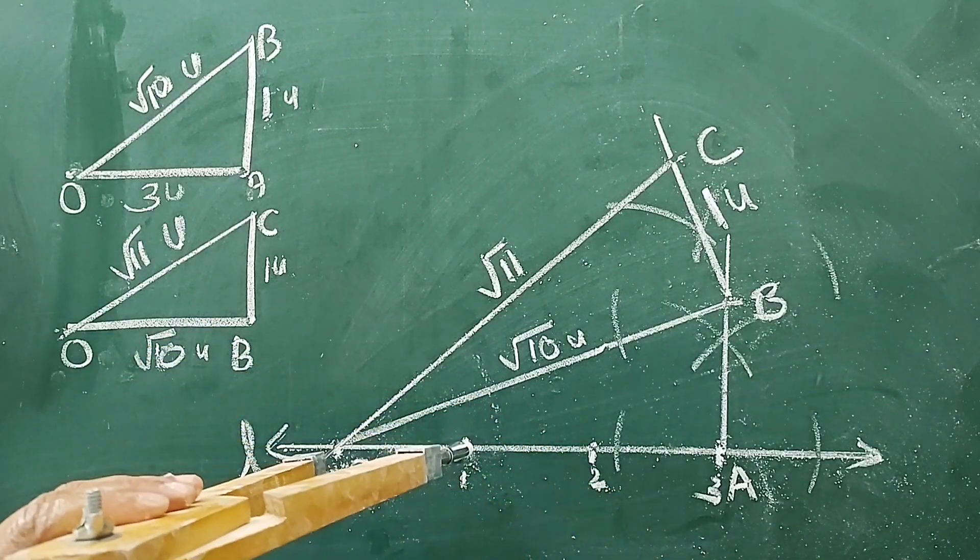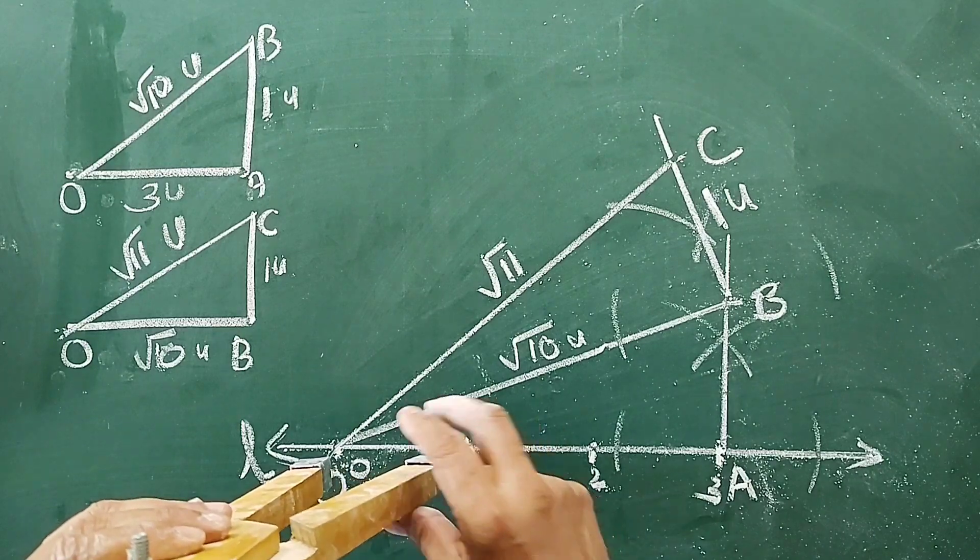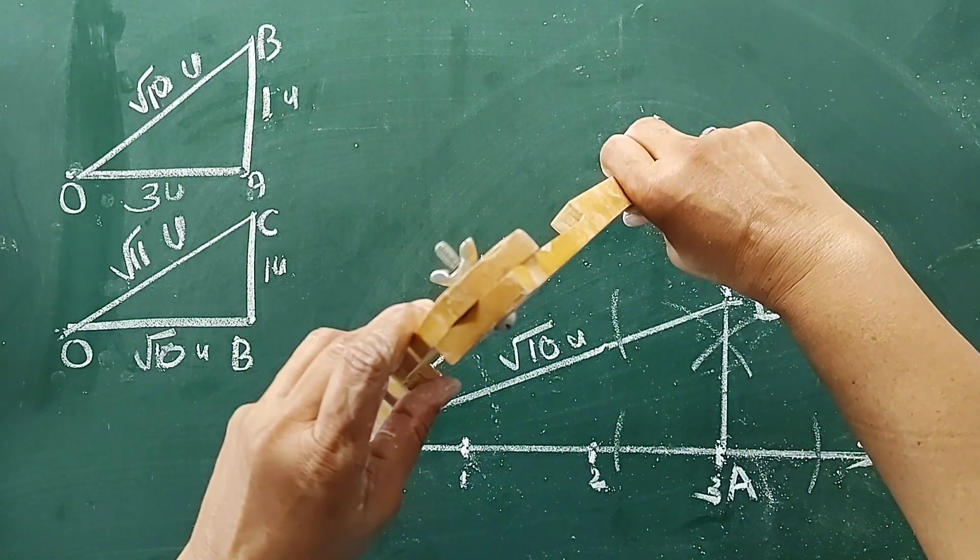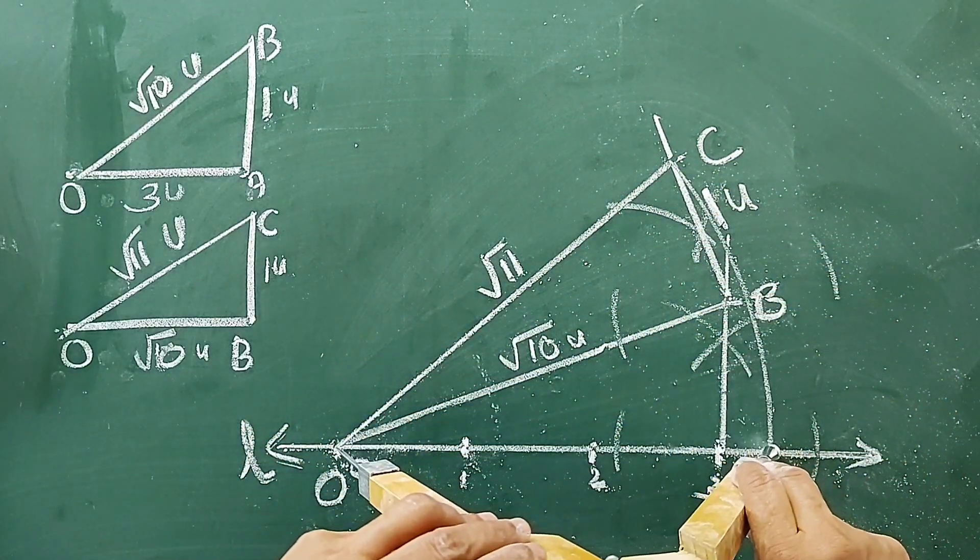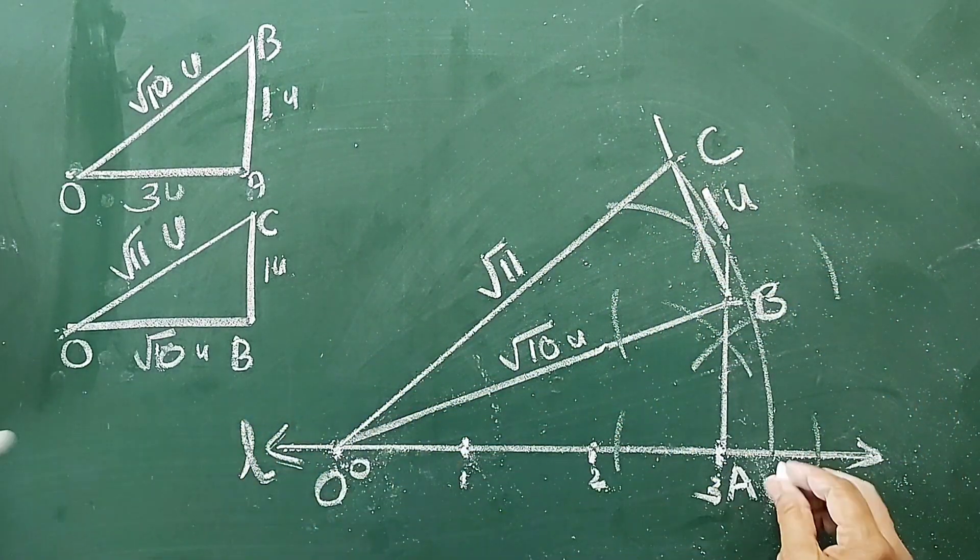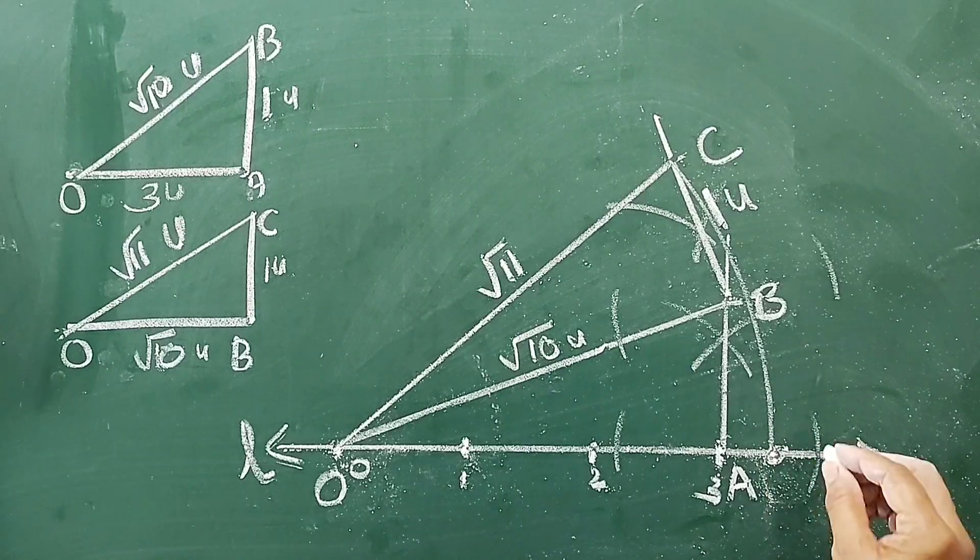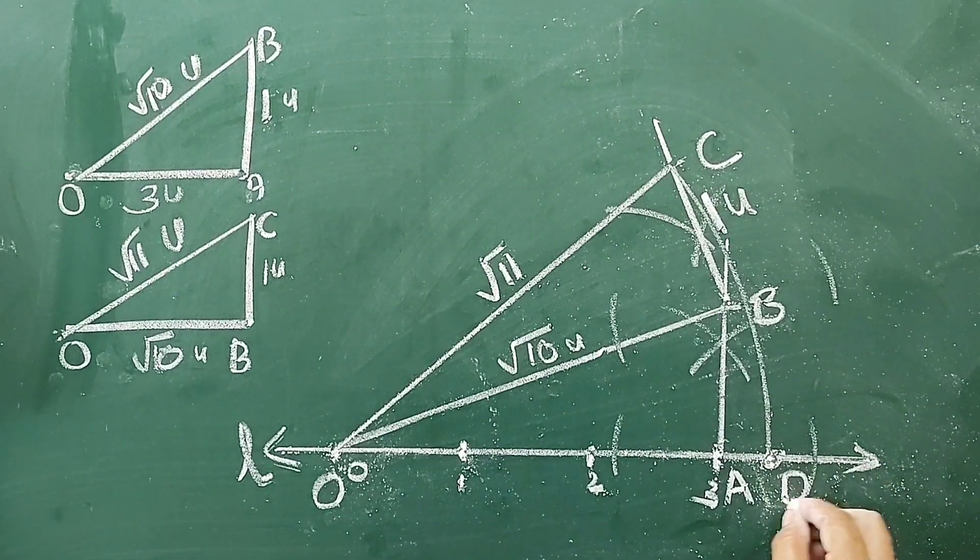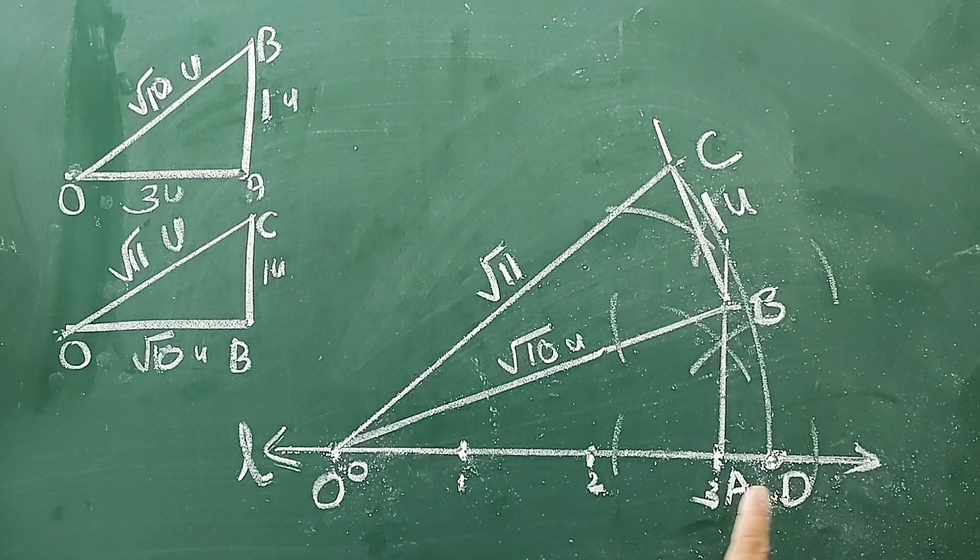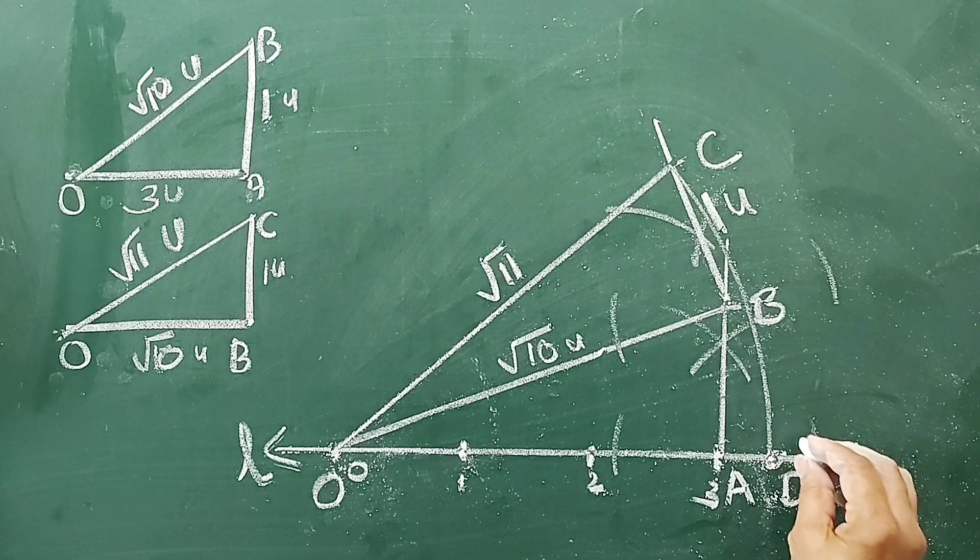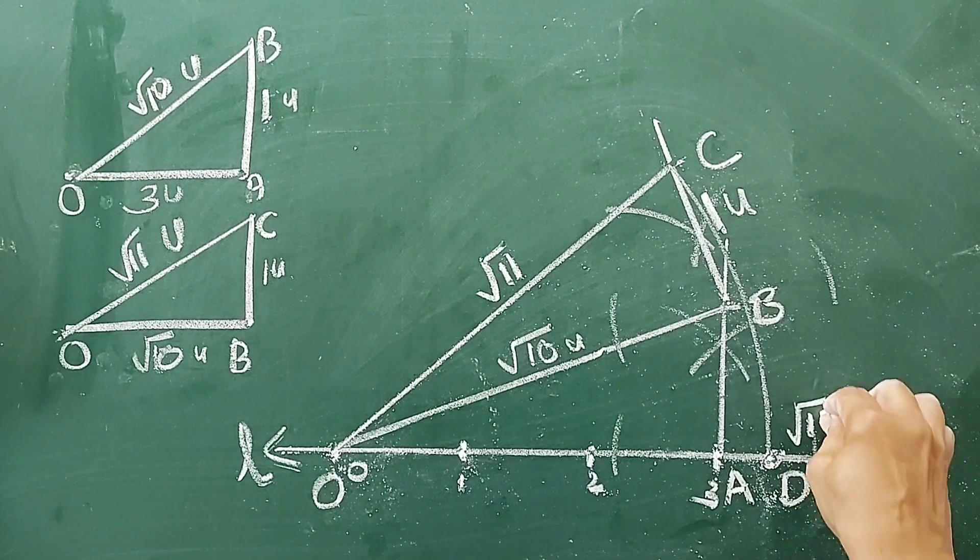Now, we can represent this √11 on the number line by taking O as center and OC as radius. Draw an arc which meets the number line at the point D. So, OD represents √11, that is, this point represents √11.